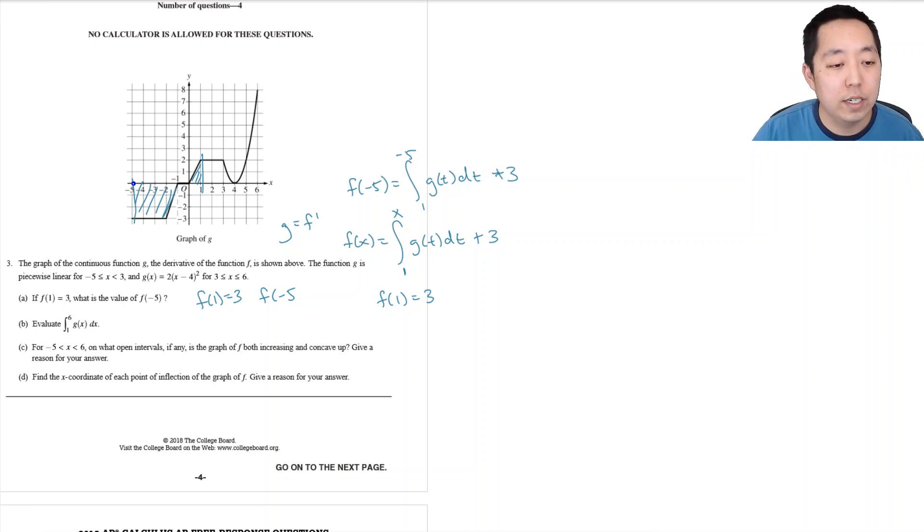So this area is negative area because it's below the x-axis. I can break it up into a rectangle and a triangle. And so this area down here, let's see, it's 4 by 3, that's minus 12 right there, 4 by 3.